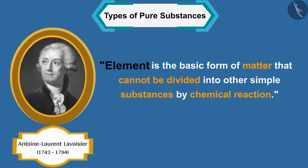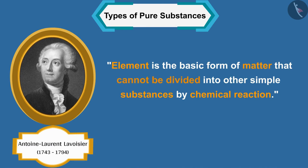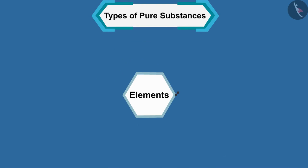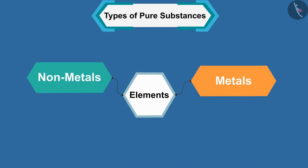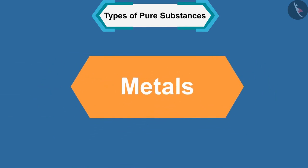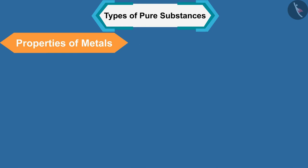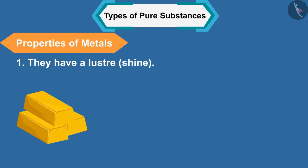According to Lavoisier, an element is the basic form of matter that cannot be divided into other simple substances by chemical reaction. Elements can generally be classified into metals, non-metals, and metalloids.